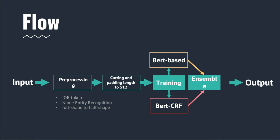In short, the full pipeline can be represented as a chart. We preprocess the input, then cut and pad to fixed lengths. After that, we train a BERT-based model and a BERT-CRF model respectively. At last, we combine the outputs of both models to produce our final output.